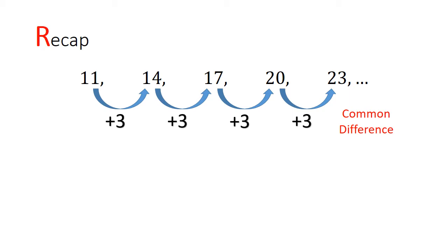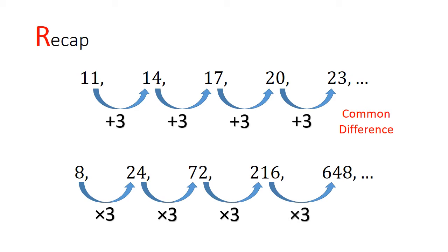Today we are going to look at a different kind of sequence. In a geometric sequence, each successive term is increased by a multiplicative factor, which is 3 in this case. So 8 times 3 gives you 24, 24 times 3 gives you 72, and so on. This factor of 3 is also known as the common ratio.